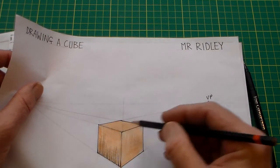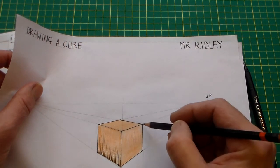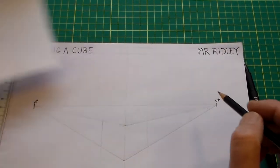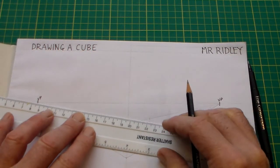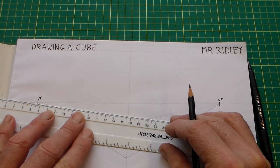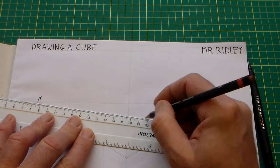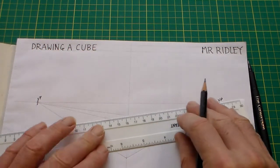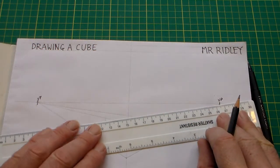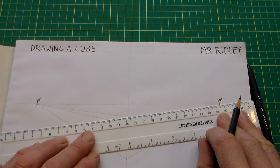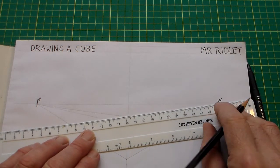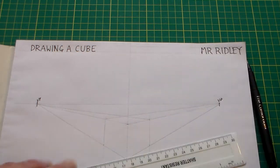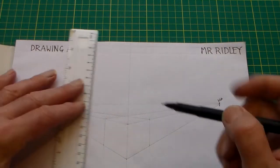Now we can see that we've created this face here, this face here. What we need to do now is create this top face, and how we do that is we go from this point here to there and this point here to there. Pick up one point and then move the ruler to the other point. There we have our cube.